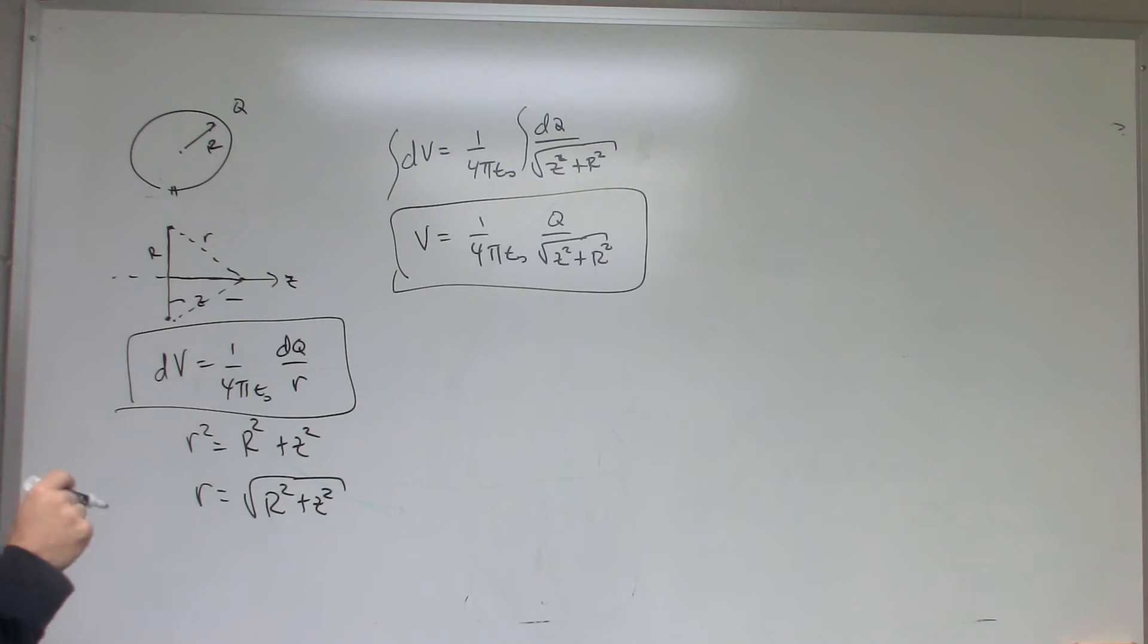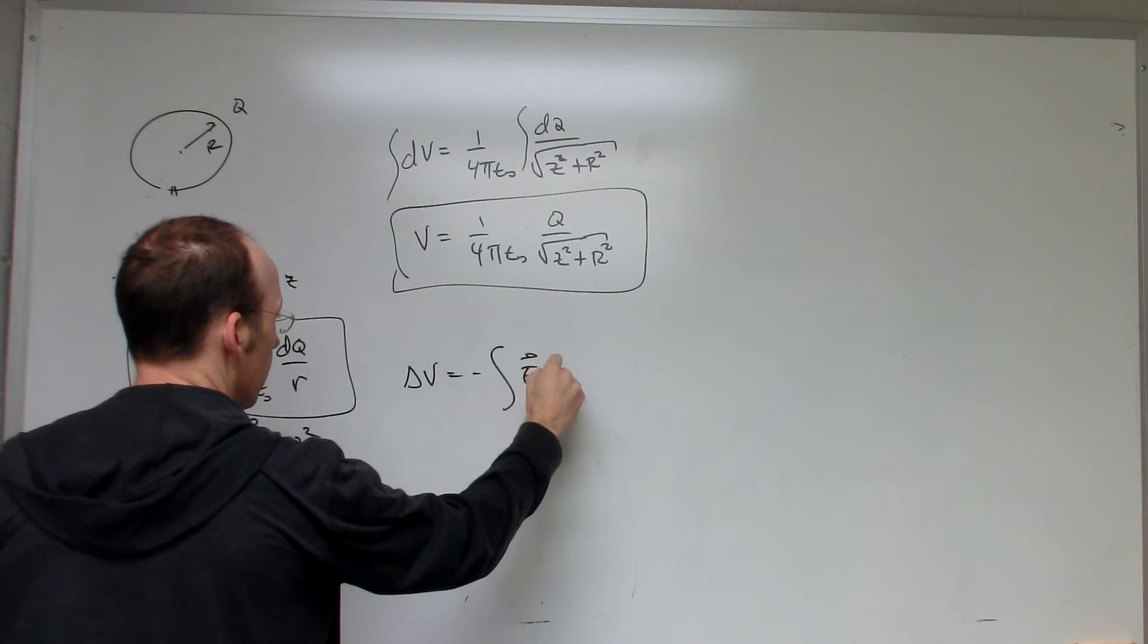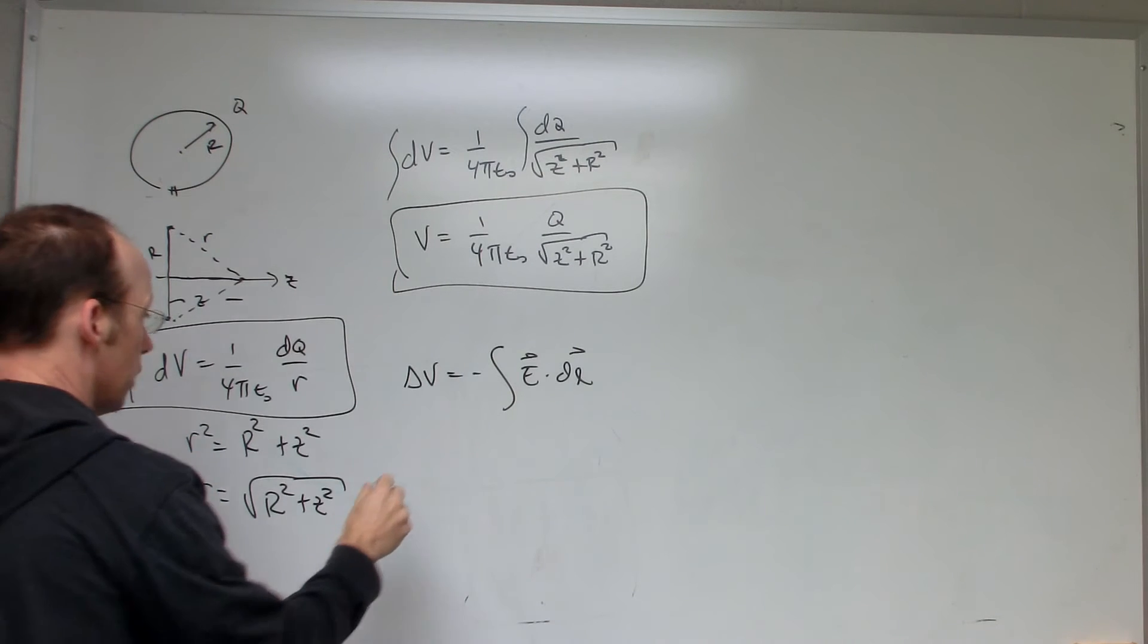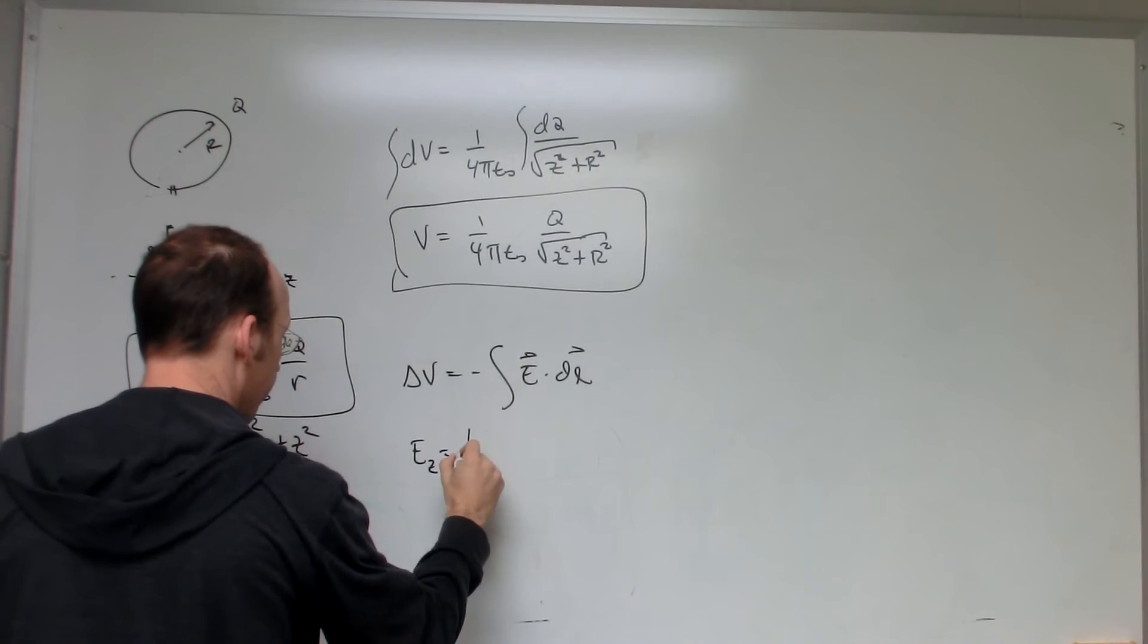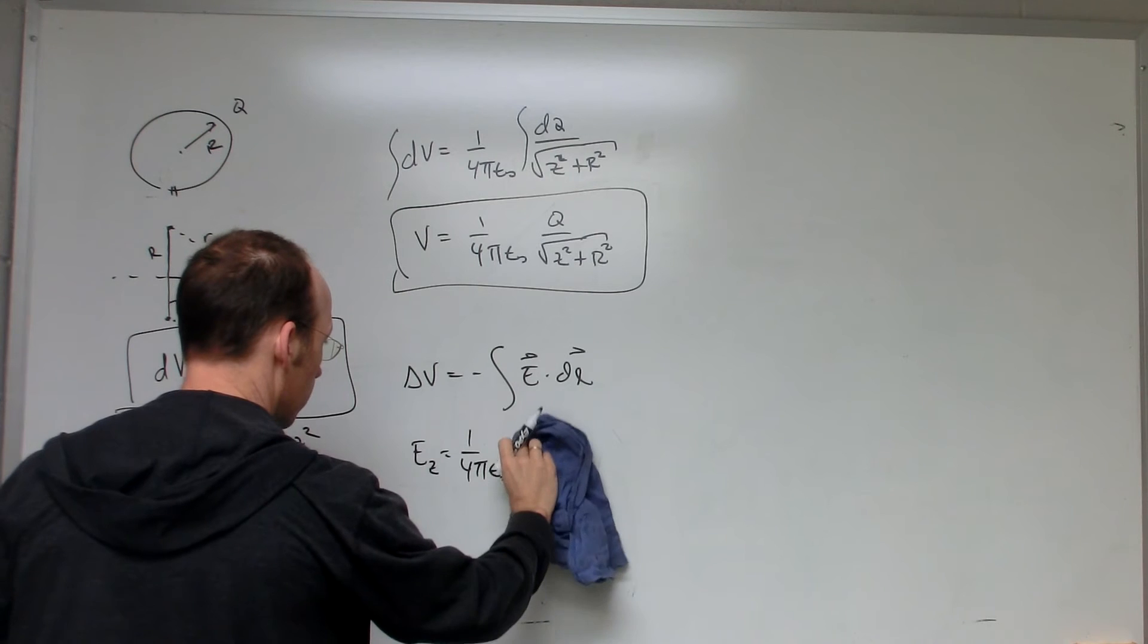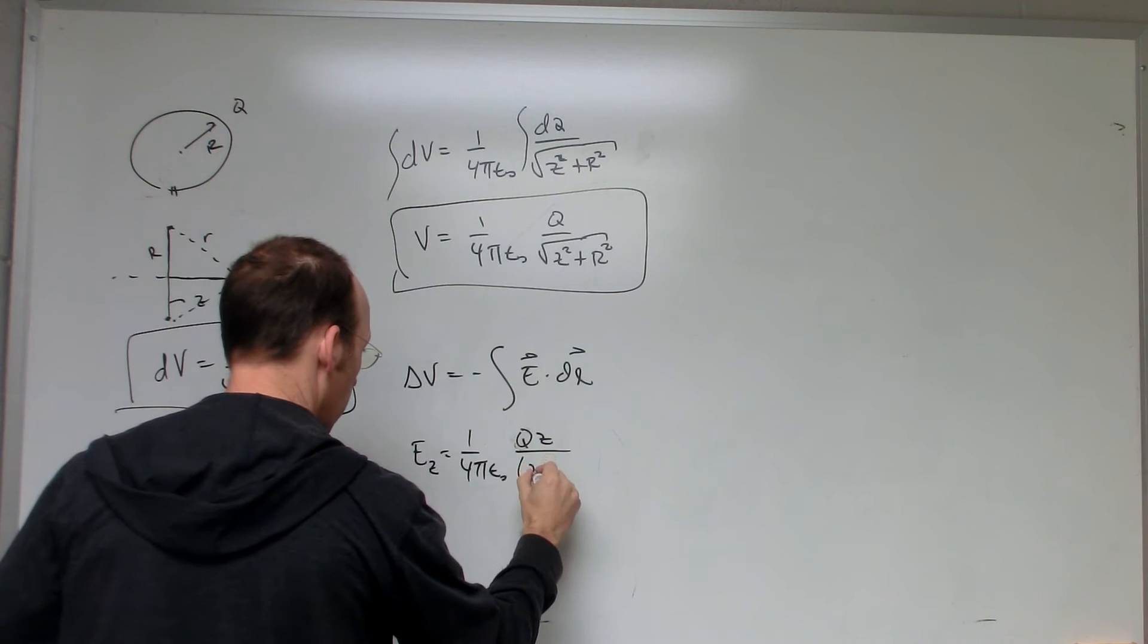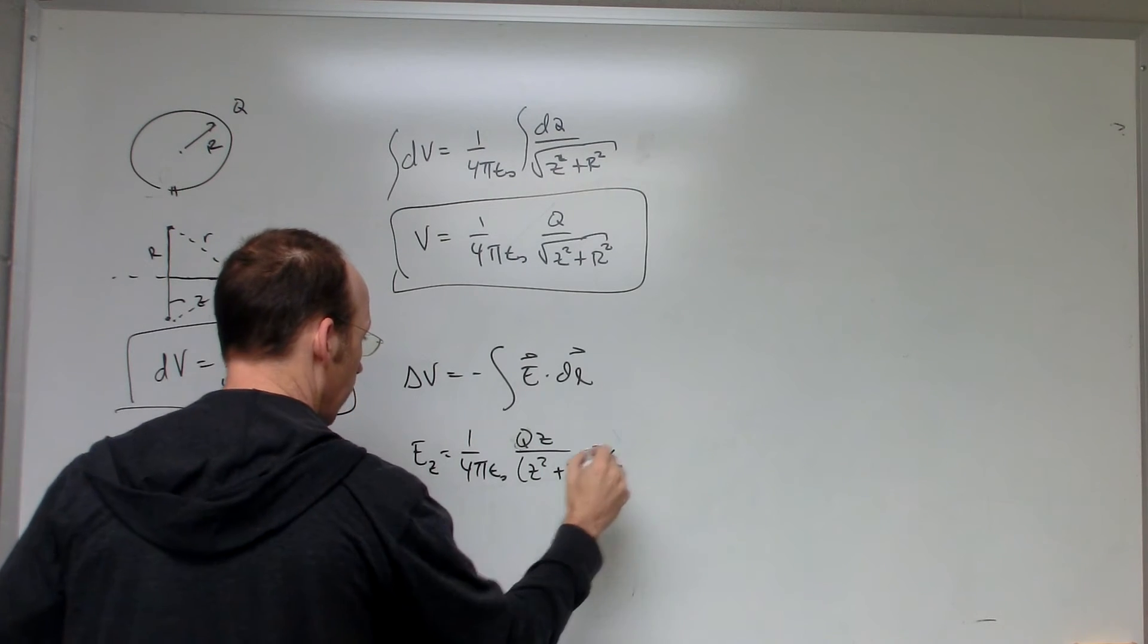Now let's use a different method. Let's use delta V equals negative E dot dl to find the electric potential, where I'm going to use the electric field due to a ring which we found before. So in the z direction, Ez is going to be equal to 1 over 4π epsilon not, Qz over z squared plus R squared to the three halves. That's what we found before.